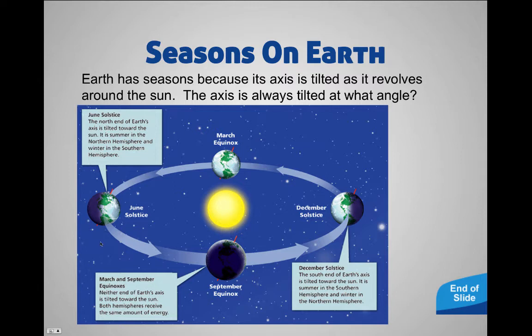Right now when I'm recording this it is July, so we are just past the June solstice. The June solstice happens on June 21st or 22nd, somewhere around there. At that point the northern hemisphere is tilted towards the Sun, which means it is getting a lot of direct sunlight — it's hotter. The June solstice signals summer, which is the hottest season for us.